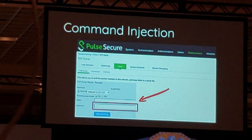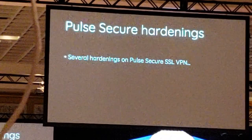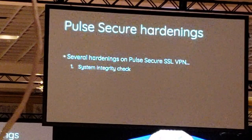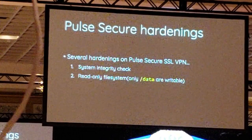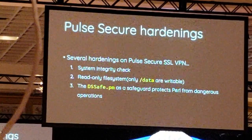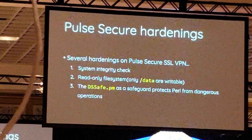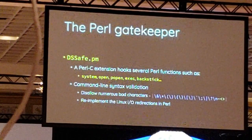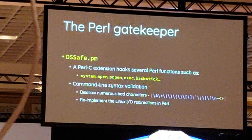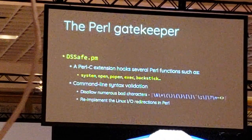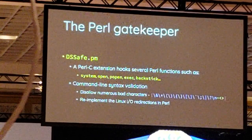No, I don't think so. In order to avoid potential vulnerabilities, PulseSecure still applies a lot of hardening on their products, such as the signer integrity check and the read-only filesystem to protect from backdoors in Chrome or WebBook. The most effective protection is the DSSafe module — it's like a safeguard to protect Perl from dangerous operations. DSSafe is a Perl module written in C++. The module, when equipped, overrides custom functions and blocks several dangerous functions such as system, open, and backtick. It also disables numerous special characters and disables Linux IO redirection in Perl.